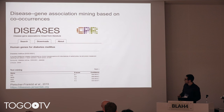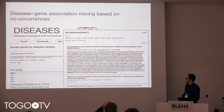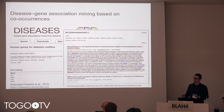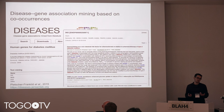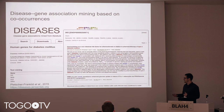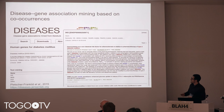You can click on a row, and what you will see is basically all the papers, all the abstracts that co-mention the two terms — the disease and the gene — and this list is much longer than what I'm showing here.